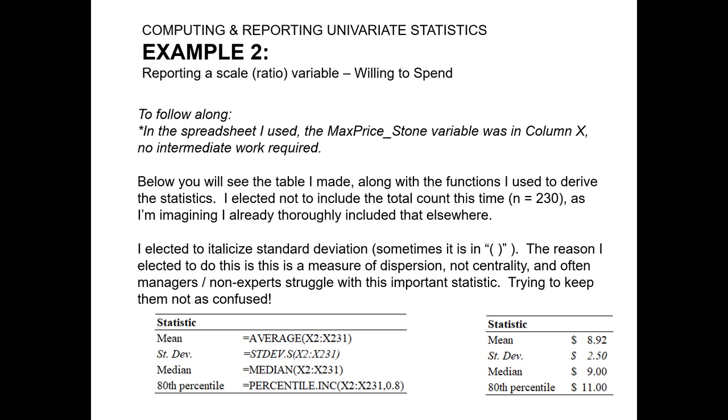Again as a reporting decision, I already mentioned I chose to exclude some of the summary statistics that we might sometimes report for ratio level data. I also notice here that I italicize the standard deviation of max price willing to pay. The reason I elected to do this is because standard deviation is a measure of dispersion. And measures of dispersion are quite important and actually very insightful for marketing managers. But oftentimes people who are less familiar with statistical analyses are not so familiar with seeing standard deviation. So I italicized it as a way to sort of flag that it's sitting out as something unique.